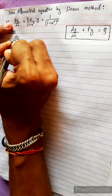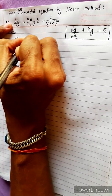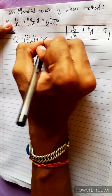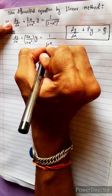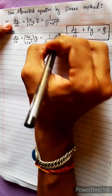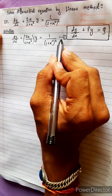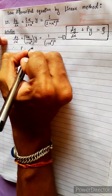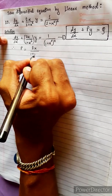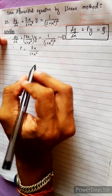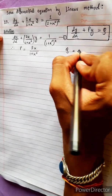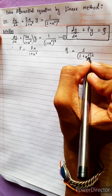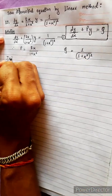We compare with: dy/dx plus (2x / (1 + x²))·y equals 1/(1 + x²)². By comparison, P equals 2x/(1 + x²) and Q equals 1/(1 + x²)². Now we find the integrating factor.